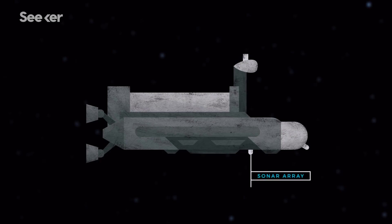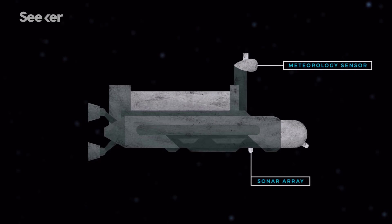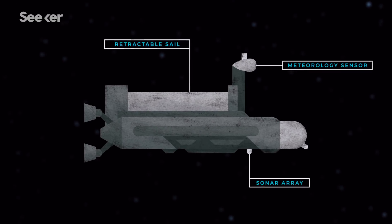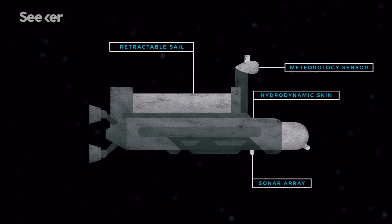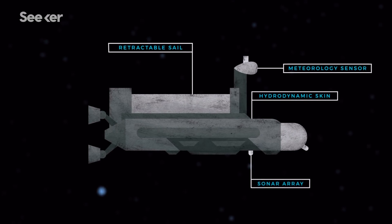The latest blueprints include a sonar array, meteorology sensor, a retractable sail, and a hydrodynamic skin for the six-meter-long sub, plus cameras, of course.